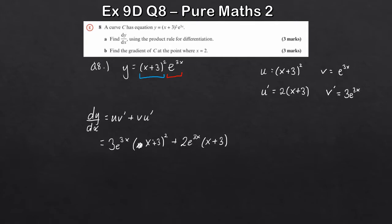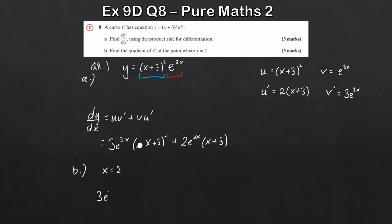For part b, we want to find the gradient of C. Remember, dy by dx allows us to work out the gradient given an x-coordinate. Since x is 2, we substitute into dy by dx. That gives 3e to the 6 times x plus 3 squared — when x is 2, that's 5 squared, which is 25. So the first term is 75e to the 6. The second term is 2e to the 6 times 5, giving 10e to the 6.